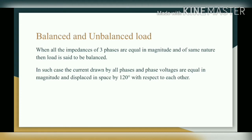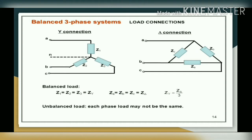Next is balanced and unbalanced load. When all the impedances of three phases are equal in magnitude and of the same nature, then the load is said to be balanced. In such a case, the current drawn by all phases and phase voltages are equal in magnitude and displaced in space by 120 degrees with respect to each other. In balanced load, Z1 is equal to Z2 is equal to Z3.